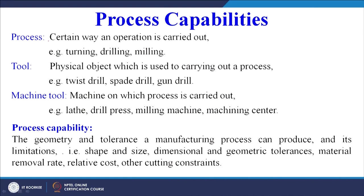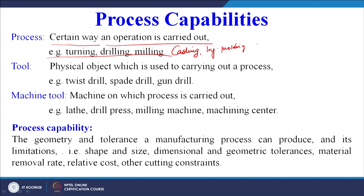Now let us try to understand the word 'process capability.' What is a process? A process is a certain way an operation is carried out — for example, turning, drilling, milling, or for shaping parts: casting, injection molding for plastics. What is a tool? A tool is a physical object used to carry out the process — for example, a twist drill, a spade, a gun drill, a mold, or a die — anything used to convert raw material into the final product.